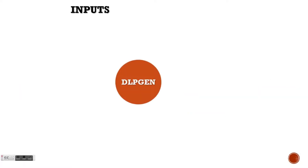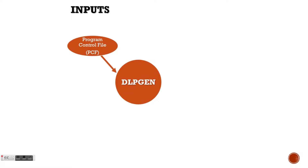In order to use DLPgen, you need three different types of input files. The first one is a program control file which contains all the necessary information for DLPgen to run, namely file locations, simulation box composition, and simulation box dimensions.